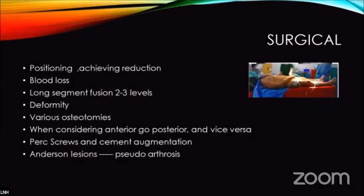For positioning, reduction must be achieved. Blood loss is a problem and long-segment fixation is needed. While the usual formula is one level above and one below, in these patients at least three above and three below are required to stabilize the spine. There are various types of osteotomies available: SPOs, Smith-Petersen osteotomies, pedicle subtraction osteotomies, and vertebral column resections. Percutaneous screws and minimally invasive approaches should be used where possible to reduce blood loss and complications.